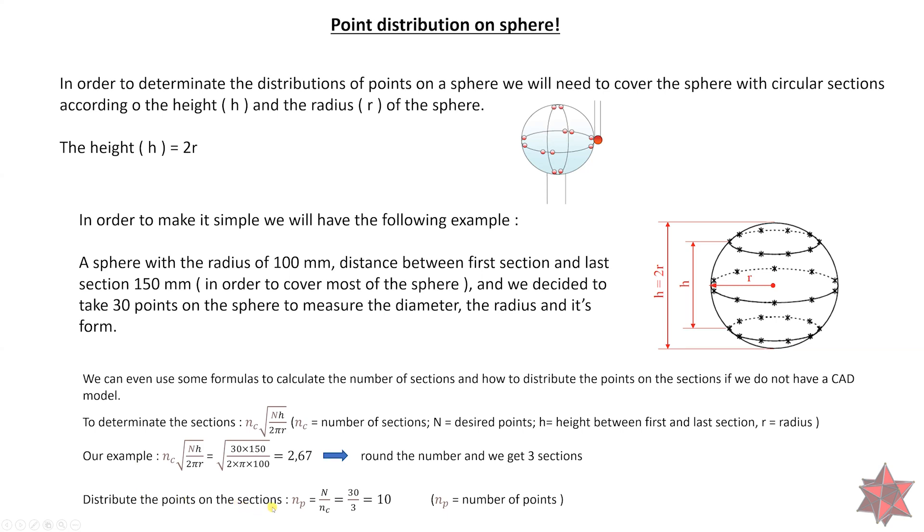And also, we will have to know how to distribute the points on the sections of the sphere. And this is the formula right here, where NP is the number of points equals N, the desired number of points, which is 30 in our case, and the NC that we have the result right here is 3. So we will have 10 points on each circular section.